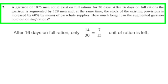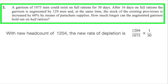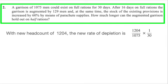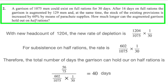But the 60% replacement leaves us at 56 over 75 units. With a larger headcount of 1,204, assuming full ration each day, the ration would deplete at a rate of more than 1 over 30th, multiplied by 1,204 over 1,075. Now, taking into assumption that the troops were to subsist on half rations, we halved the rate of depletion to get 602 over 1,075 multiplied by 1/30 units of ration depleted per day. And finally, we divide 56 over 75 by this number to see that the rations would last 40 days exactly.